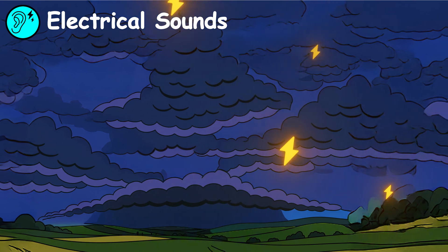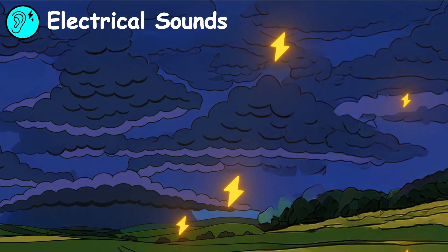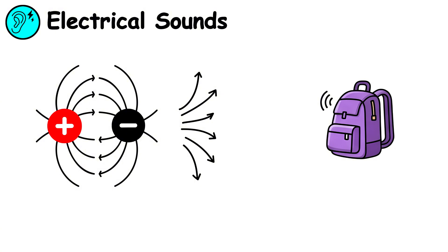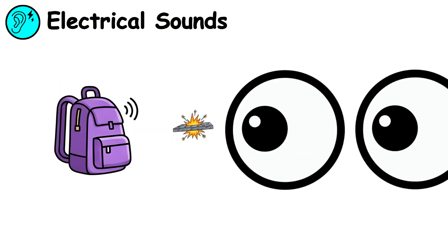What you're hearing is electricity moving through the air, small electrical discharges that happen when the electric field becomes extremely strong. The electric field forces electrons to jump short distances between nearby objects, creating quick sparks that are too small to see, but strong enough to hear.